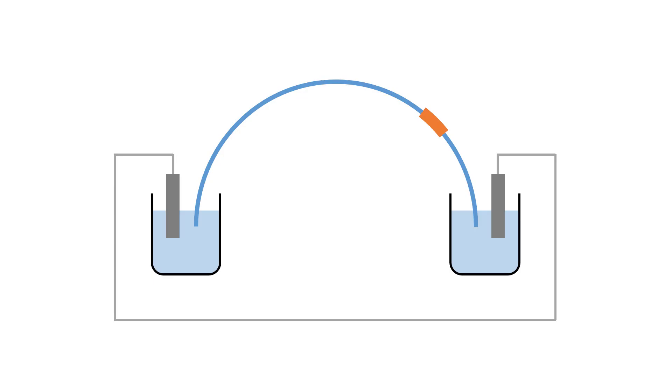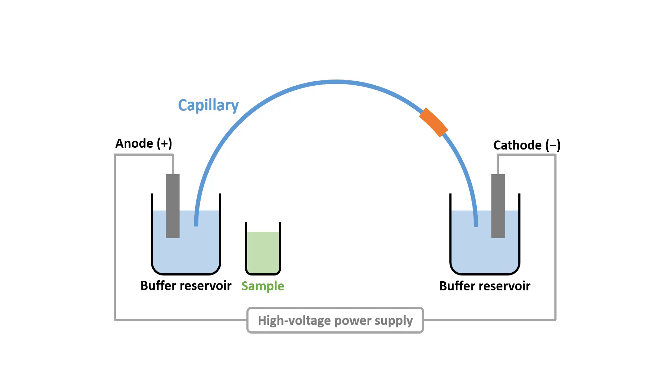The instrumentation of capillary electrophoresis is pretty simple. First, we have a fused silica capillary that extends between two buffer reservoirs. Inside these buffer reservoirs, there's a platinum electrode which is connected to a high voltage power supply. Our sample can be introduced at one end of the capillary while the detector is placed near the other end. The sample valve is interchangeable with the buffer reservoir during the introduction of sample.